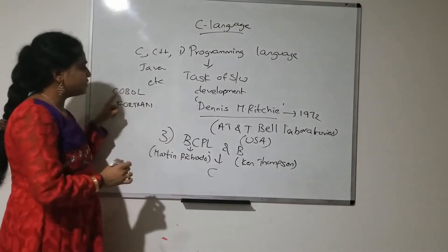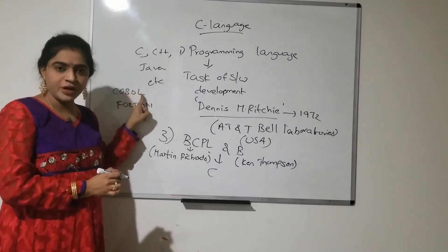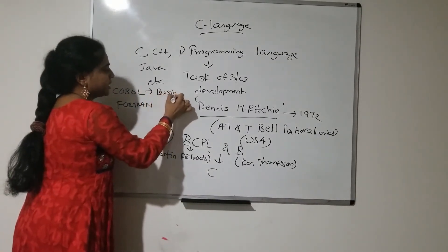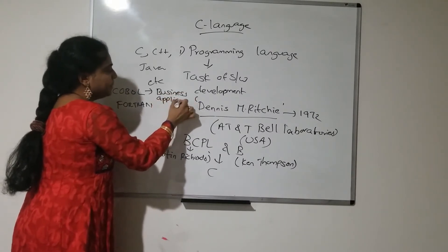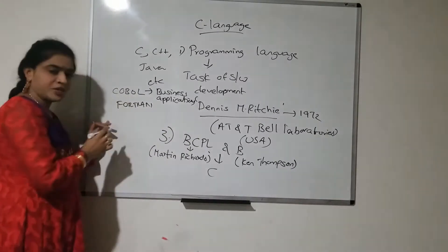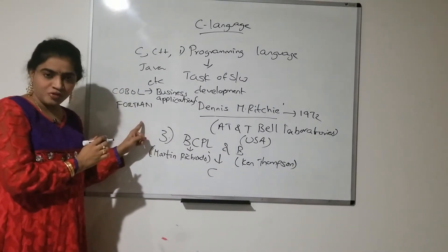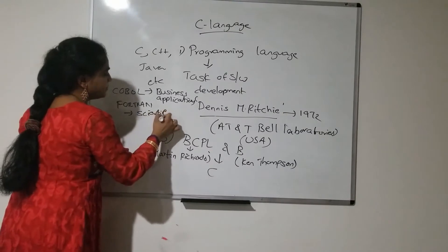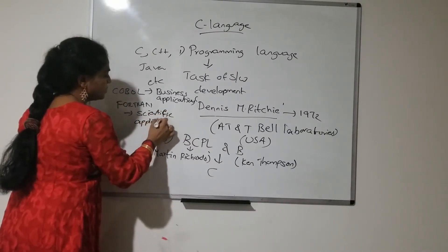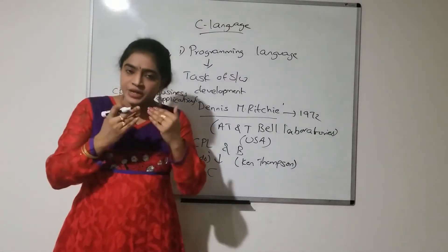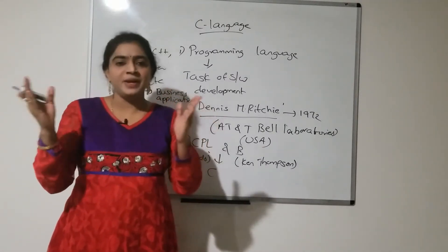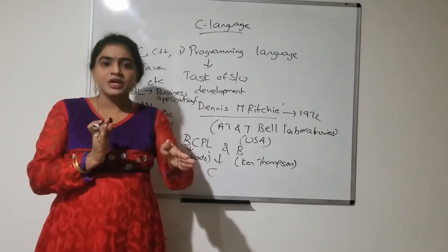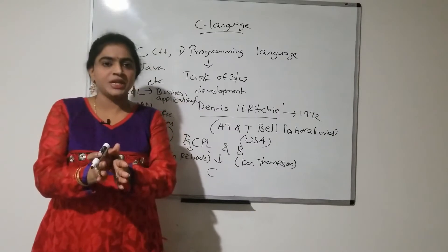COBOL stands for Common Business Oriented Language, and it is meant only for business applications. FORTRAN stands for Formula Translation, and it is meant only for scientific applications. As a user, we have to develop so many applications, and it is not possible to confine ourselves to only business or scientific applications.